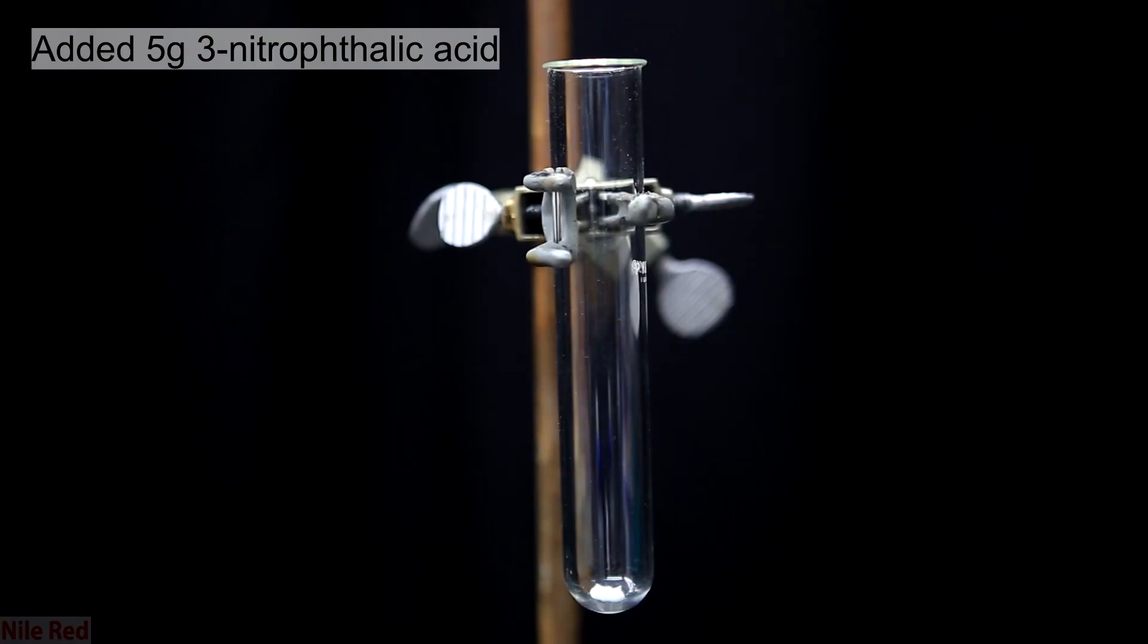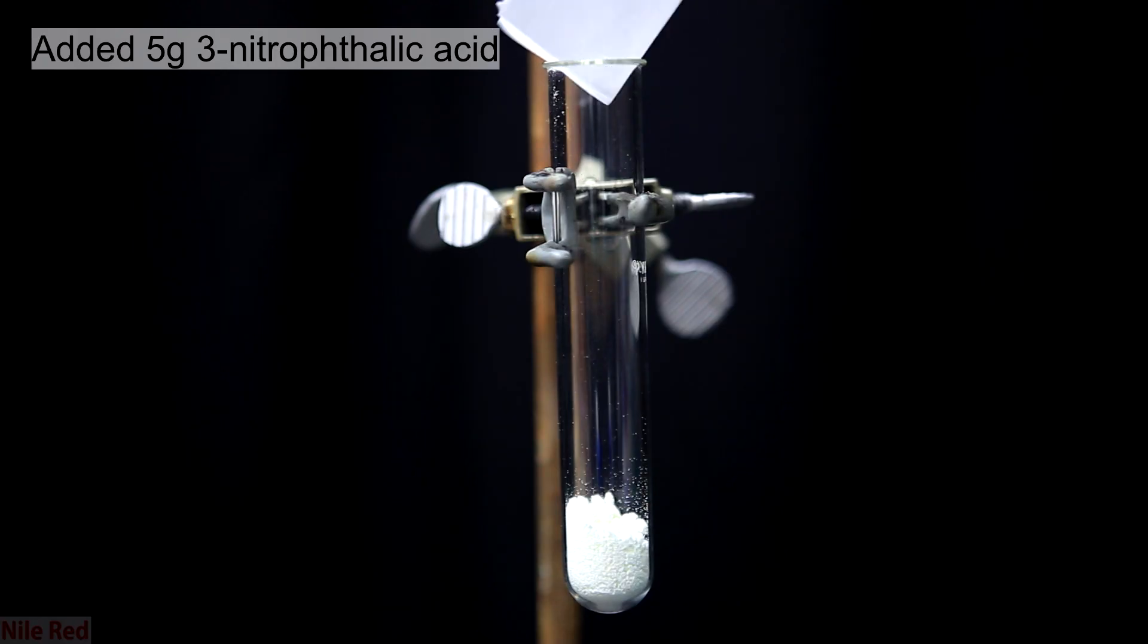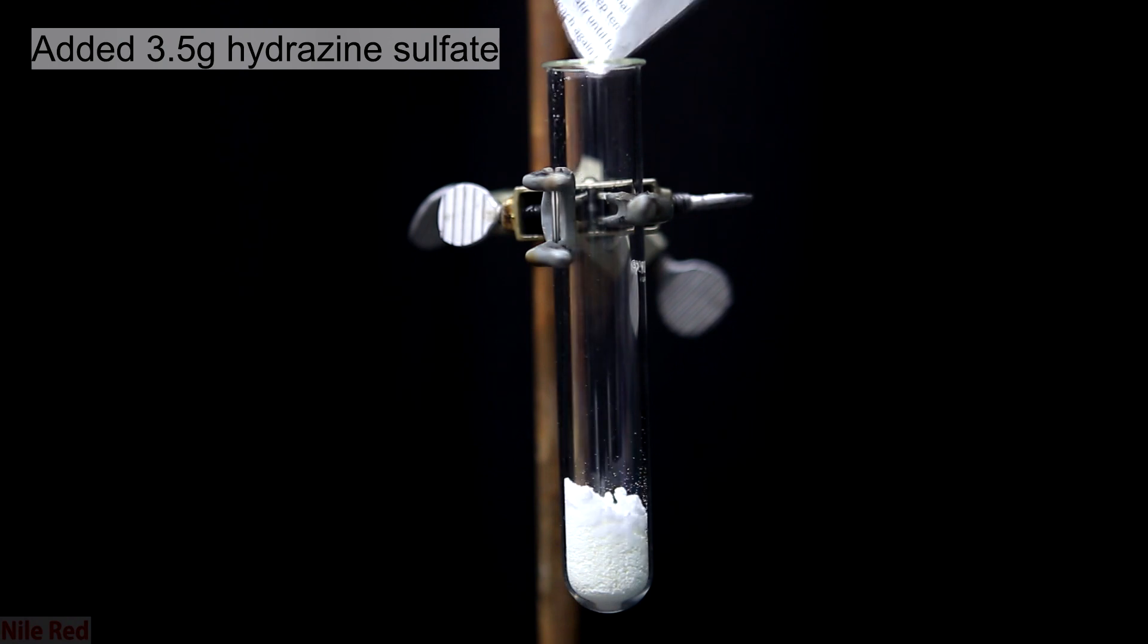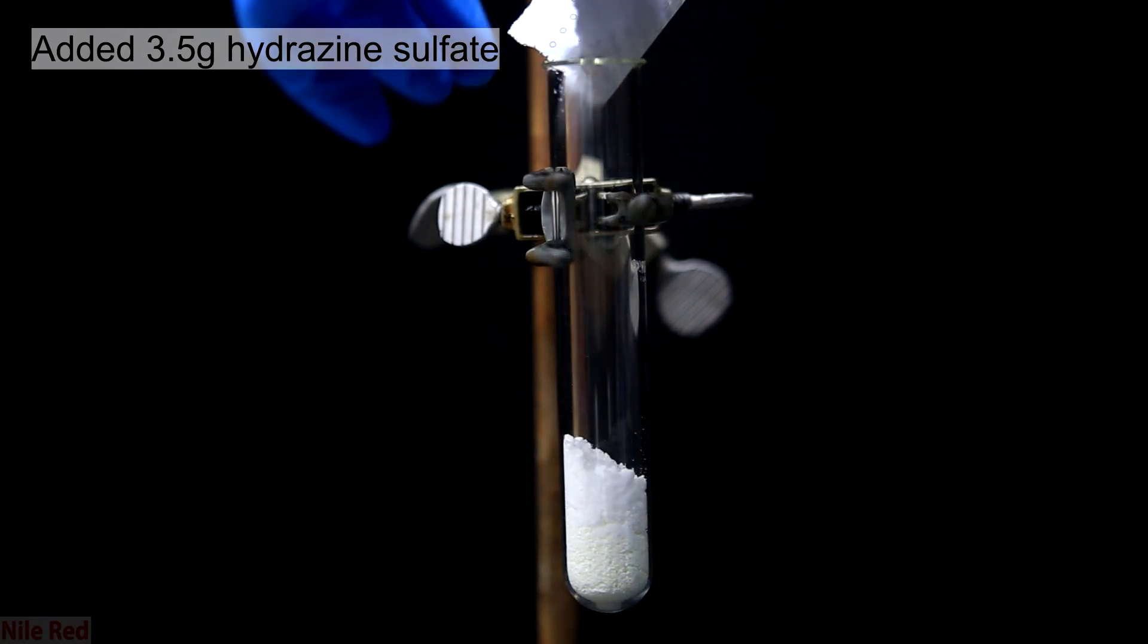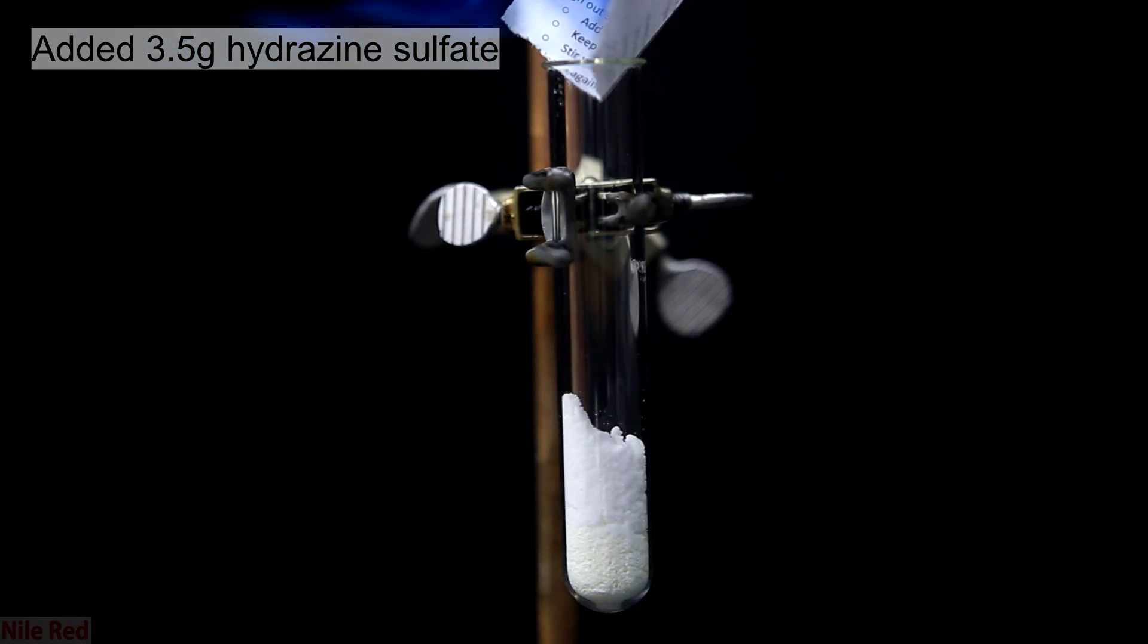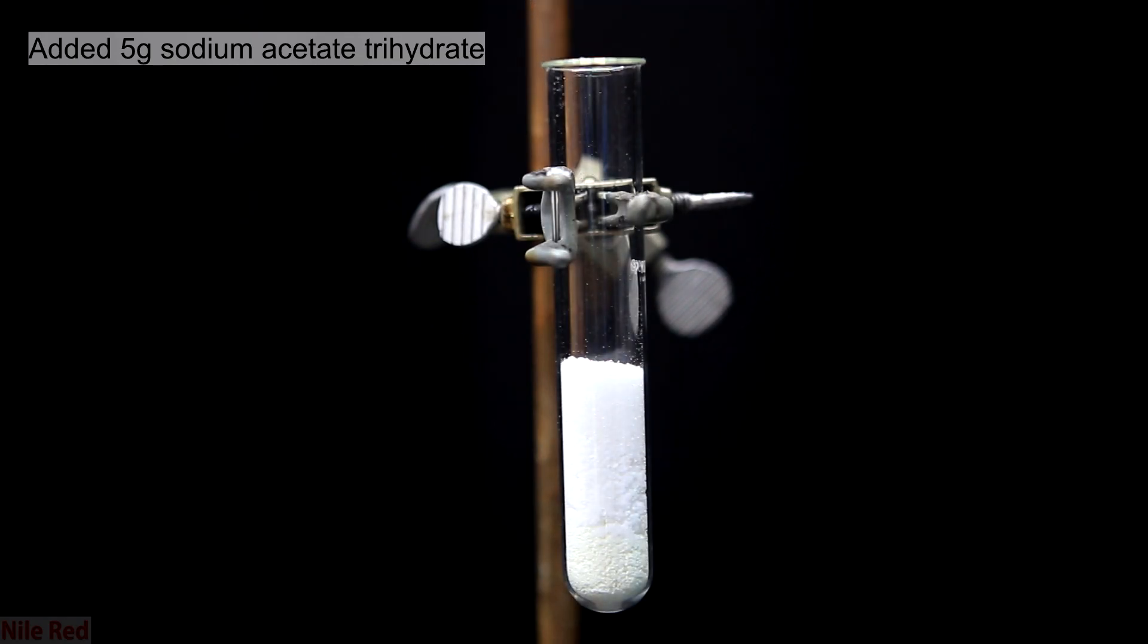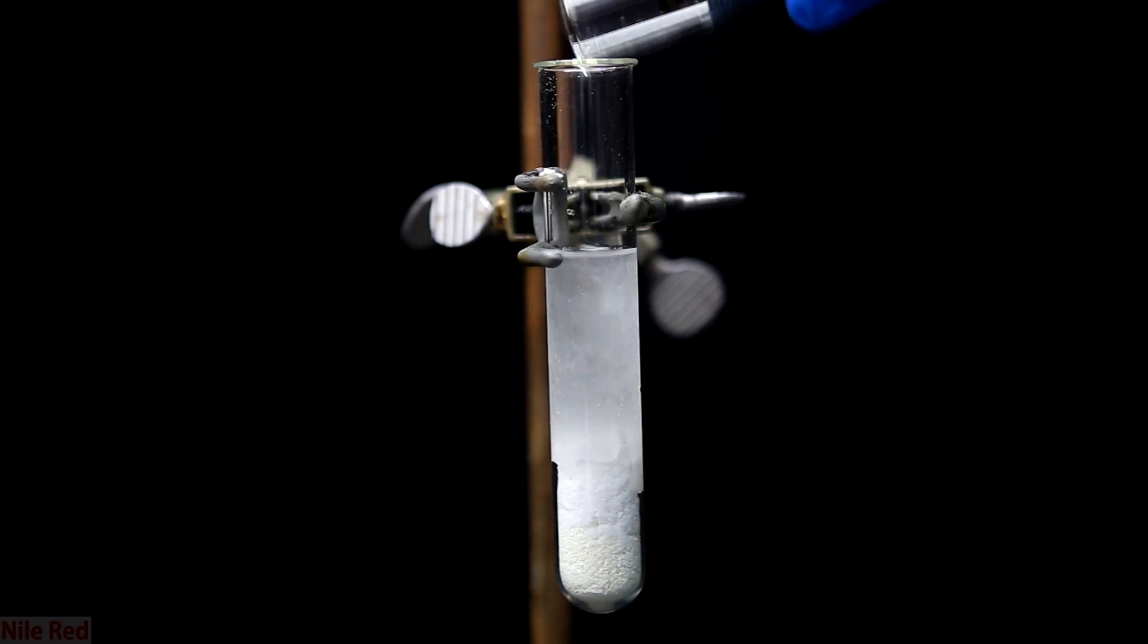I started out using a test tube because I thought I could get away with it, but I eventually had to switch. Anyway, 5 grams of 3-nitrophthalic acid was added first. Then on top of this, I pour in 3.5 grams of hydrazine sulfate. I'm not sure why I added it in 3 separate portions, I think I was afraid of missing and spilling it over the edge of the test tube. Then on top of this, I add 5 grams of sodium acetate trihydrate. The order of addition of these powders really doesn't matter.